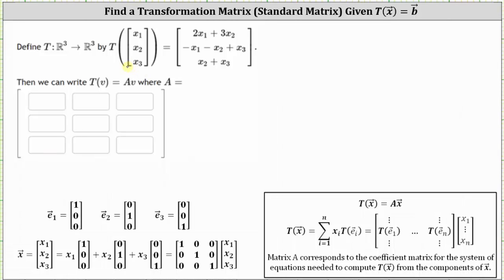We can do this a couple of ways. Because we're in R3, the standard basis vectors are the vectors e sub one through e sub three, where vector e sub one is (1, 0, 0), vector e sub two is (0, 1, 0), and vector e sub three is (0, 0, 1).